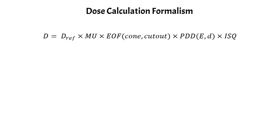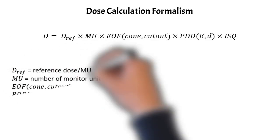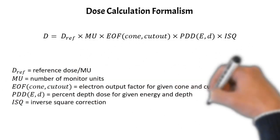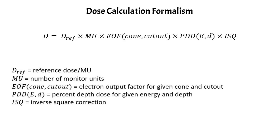This is the formalism here, and I'll write down a few of the terms. DREF is your reference dose per monitor unit established during your calibration. MU is number of monitor units. EOF is your electron output factor, which is a function of your cone size and also your cutout size. Then you have a percent depth dose, or PDD, which is a function of your beam energy and the depth of calculation. Then you have an inverse square correction as well.